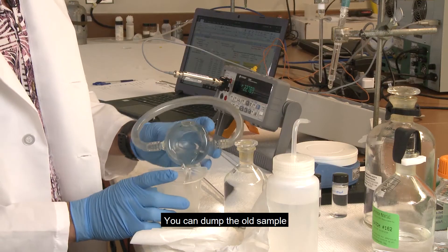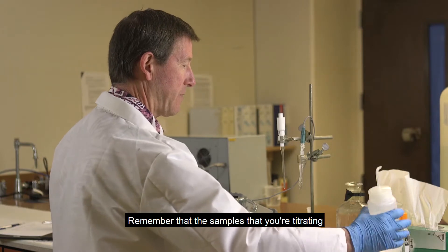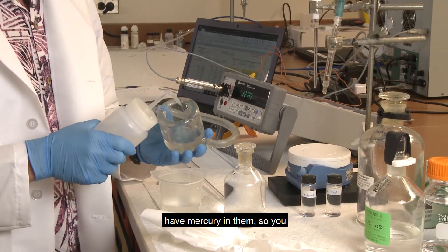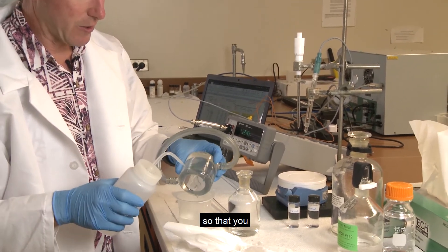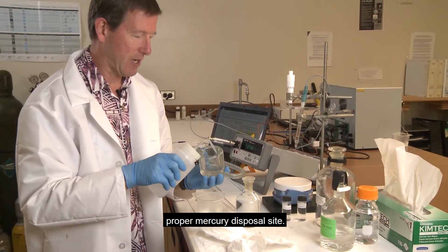You can dump the old sample in your waste container. Remember that the samples that you're titrating have mercury in them, so you want to save all of your waste so that you can put it into a proper mercury disposal site.